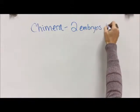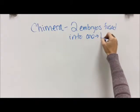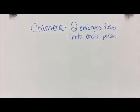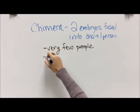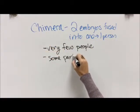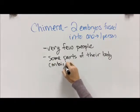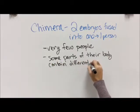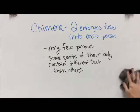This one is super peculiar. A chimera is what happens when you have two separate embryos, two eggs, two sperm, that fuse into one person. Very few people have this, but what happens is that some parts of their body have completely separate DNA than other parts of their body because there are two different people that fused into one.